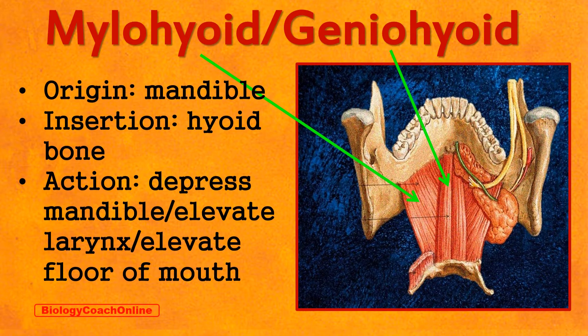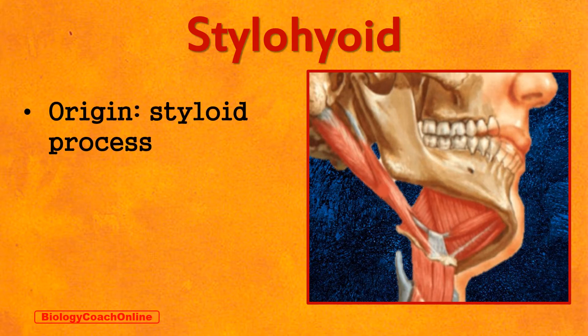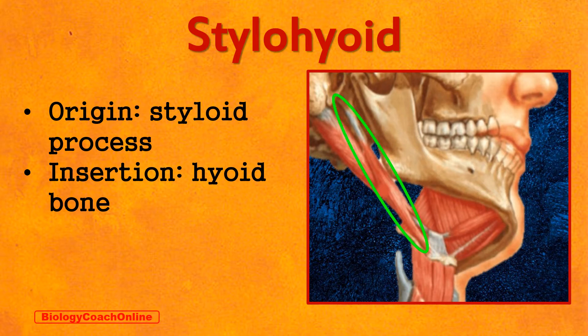The stylohyoid muscle has its origin on the styloid process of the temporal bone — recall that structure from lecture 2 — and its insertion on the hyoid bone. Here is the anterior belly of the digastric muscle, and here is the posterior belly of the digastric. The styloid process of the temporal bone is here, and the hyoid bone is here. Here is your stylohyoid muscle, whose action is to elevate your larynx.